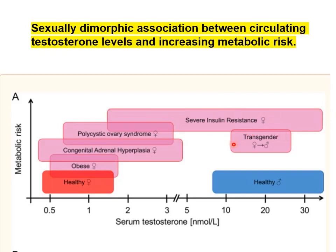In transgender women transitioning from female to male with raised testosterone levels, metabolic risk goes up. As soon as you raise testosterone levels, metabolic risk goes up. So there's a very close association between the sex steroids and metabolism.